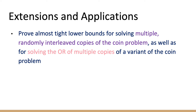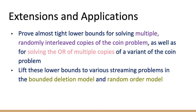Before going into the proof, I want to mention extensions and applications to data streams. We prove almost tight lower bounds for solving multiple randomly interleaved copies of the coin problem, as well as for solving the OR of multiple copies of a variant of the coin problem. These lower bounds lift to various streaming problems. Because our lower bounds are for the uniform distribution on the coin problem, we obtain lower bounds for nice distributions of streaming problems, which are appropriate for the bounded deletion model and the random order model.